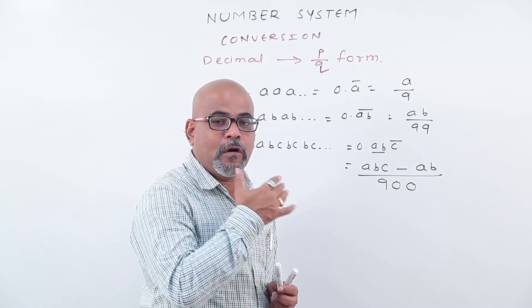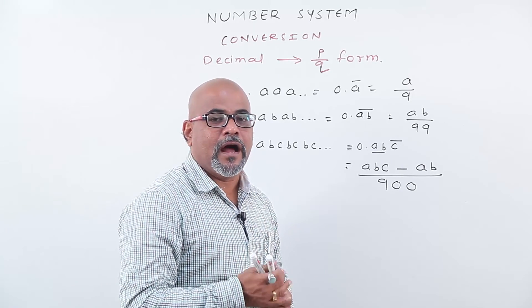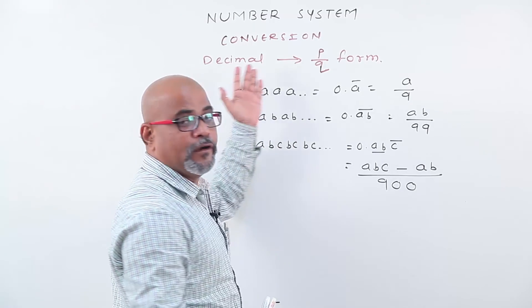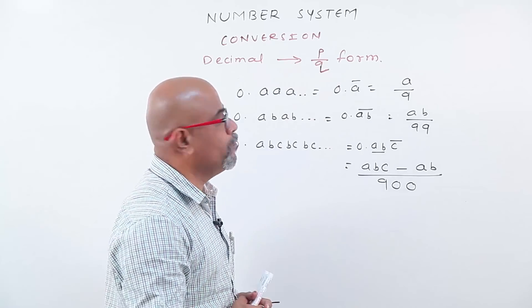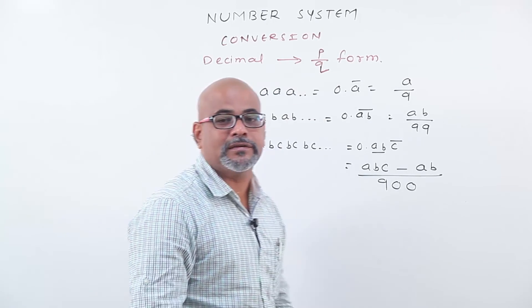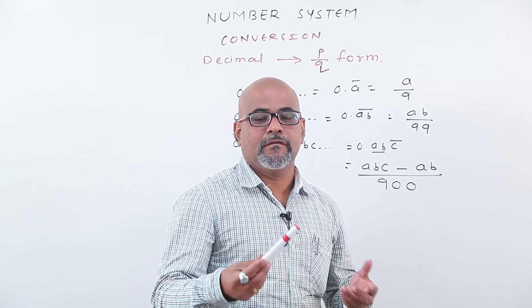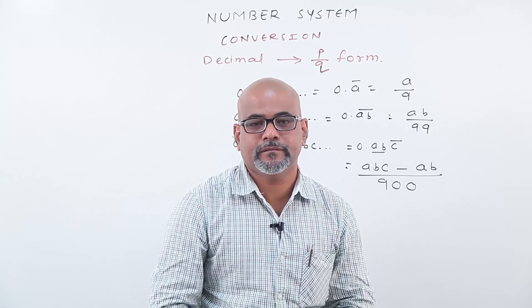From all these examples, you get an idea of how we convert decimal into p by q form. You should practice some more sums for better results.